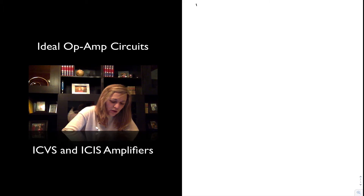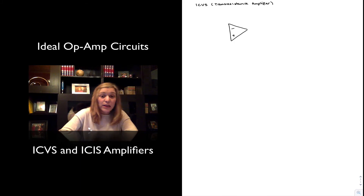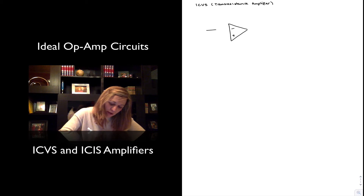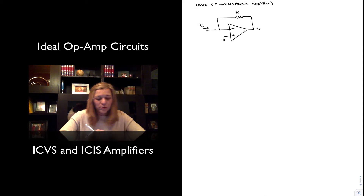An example of a current-controlled voltage source, or a transresistance amplifier, using an op-amp could be as follows. I have my op-amp with negative and positive input terminals. The current-controlled voltage source has a voltage output but a current input. So I will have my input current I_in, and then a feedback path from output to input — negative feedback — where the path is fed from the output to the inverting input terminal through a feedback resistor I'm going to call R, and my output is taken at the output terminal of the op-amp.